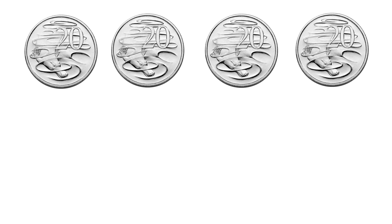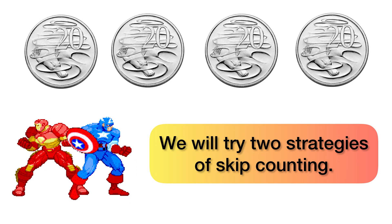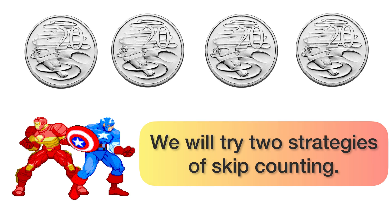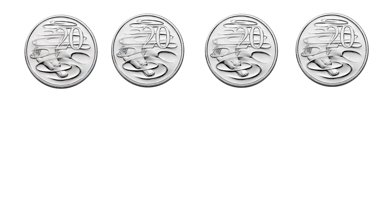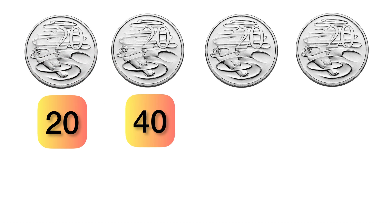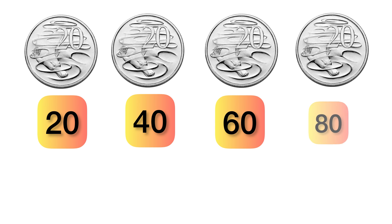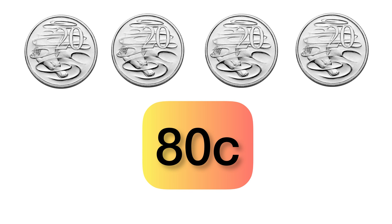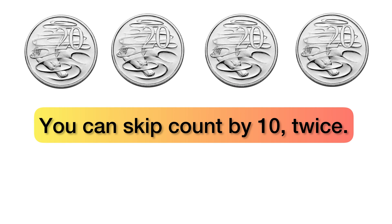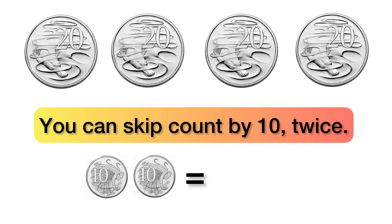Now onto a challenge. We want to add these 20 cent coins together. We're going to try two strategies. For the first strategy we're going to skip count by 20. 20, 40, 60, 80. So all together we have 80 cents. Now if you don't know how to skip count by 20 yet, you can skip count by 10 twice.